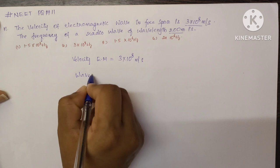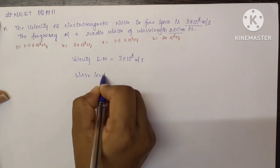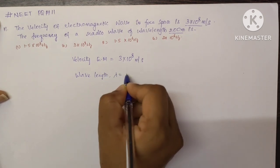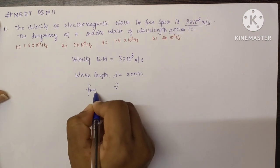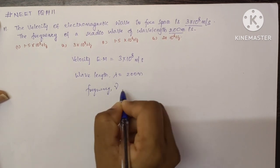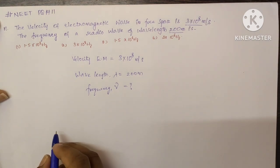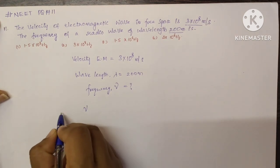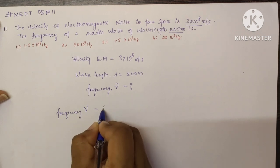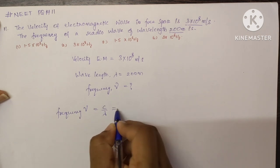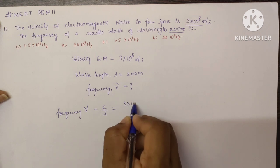...is given as 200 meters. They're asking to find the frequency. So, the formula for frequency ν equals c divided by λ, and c we know is 3×10⁸.